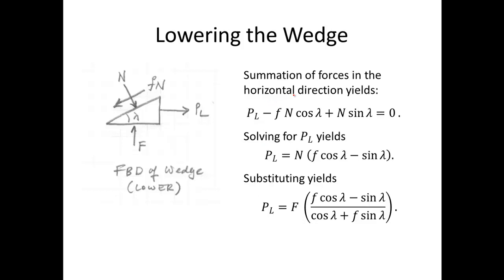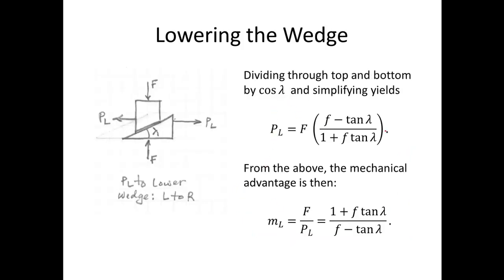Summation of forces in the horizontal direction for lowering: P_l goes left to right (positive), f·N·cos λ acts in the opposing direction, and N·sin λ acts in the positive direction. Solving for P_l gives a relationship in terms of N and F and λ, and substituting the expression for N gives a useful combined relationship. Dividing by cos λ gets us nearly to the final form.